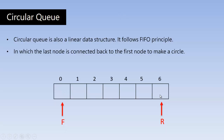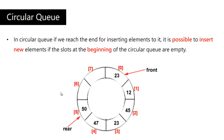Let us imagine a circular Queue which has seven locations, so that we can store seven elements. The front end is where we delete elements and the rear end is where we insert elements. This end is connected back to the other end — the last node is connected back to the first location. If you see this diagrammatically, this will be the status of the circular Queue.